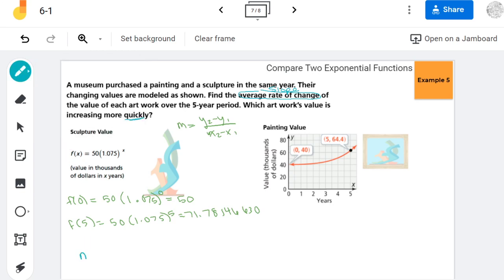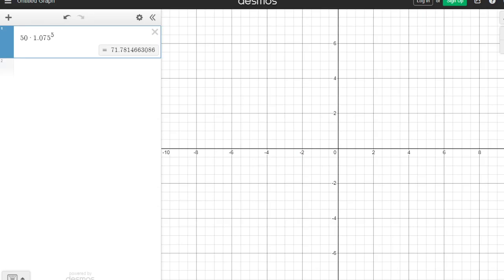I think that's far enough. So I have my two numbers so now I can find my slope. My slope is my change in my y values. So I'm going to put my 71.78146630, and I'm subtracting 50 from it. Now down below, it's important that you have it in the same order. So see how I did f of 5 first and then f of 0? So down here with the x's, I need to do 5 minus 0.